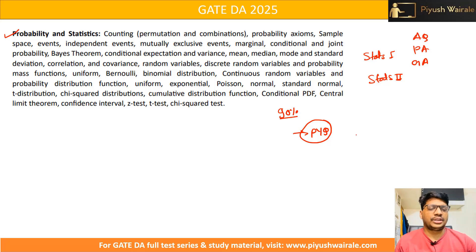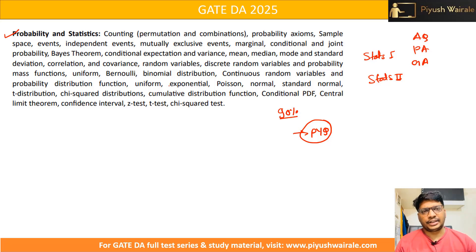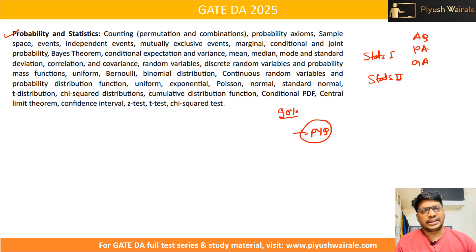Go through the content first, then move to previous year questions for Probability and Statistics. For non-IITM BS students, there is a playlist of Statistics 1 and Statistics 2 — the link will be in the description — which covers almost all the topics. Once you have gone through the content, you can solve previous year questions from other sources, or join the GATE DA course along with the subject-wise test series and full-length test series.